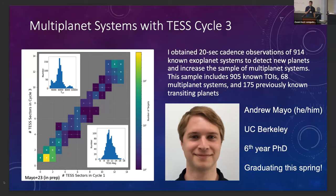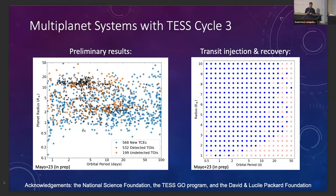Hi everyone, I'm Andy Mayo. I am a sixth-year grad student at UC Berkeley working with Courtney Dressing on detecting small planets in a diversity of exoplanet systems. I have a poster about detecting new planets in planetary systems where we've already found one planet with TESS cycle three specifically. If you're interested in hundreds of potential new threshold crossing event TCE planet signals, you should come track me down and ask me about that.